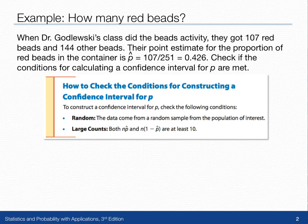In this lesson, we learned that to check the conditions for constructing a confidence interval for p, we need to look for two things. First, we want to make sure that the data come from a random sample from the population of interest. We call that the random condition.